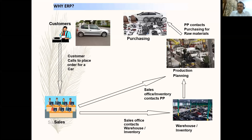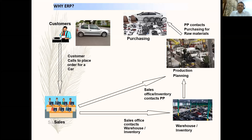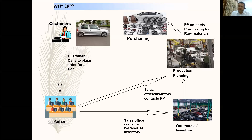ERP is the short form for Enterprise Resource Planning. What ERP does is it's an integrated software which basically brings all the business functions of an enterprise together so that they communicate with each other effectively and in real time. This means the information shared across the platform is available and accurate to everyone — if the sales department sees a certain demand, the production department sees that same demand.